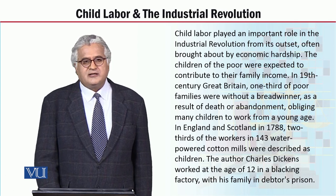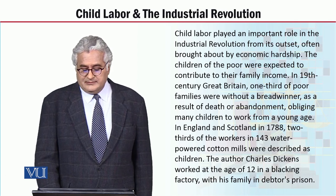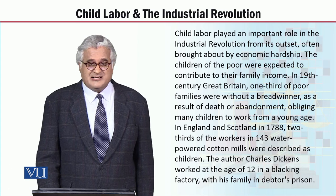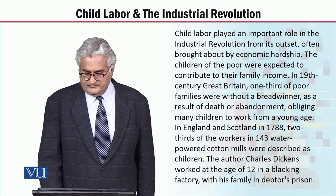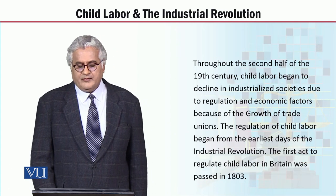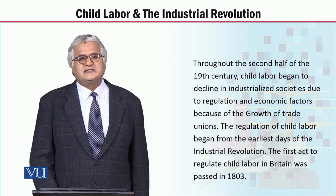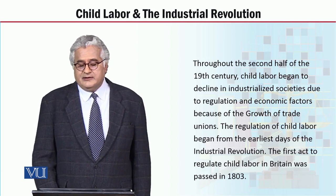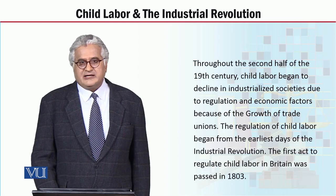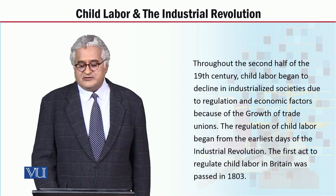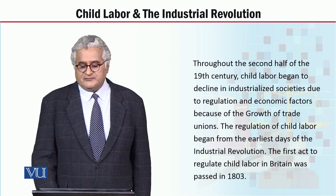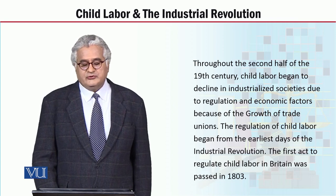The author Charles Dickens worked at the age of 12 in a blacking factory with his family in debtor's prison. Throughout the second half of the 19th century, child labour began to decline in industrialised society due to regulation and economic factors, because of the growth of trade unions.